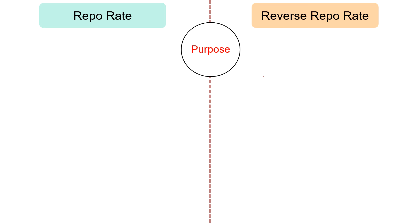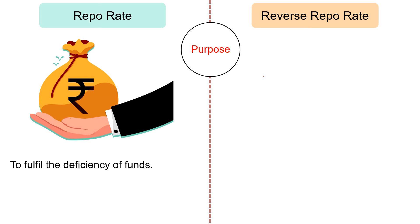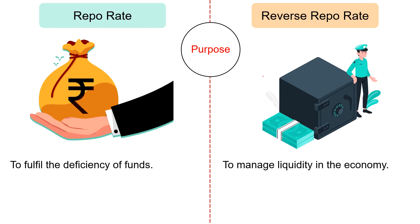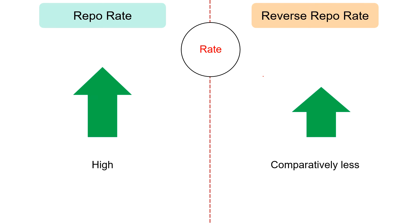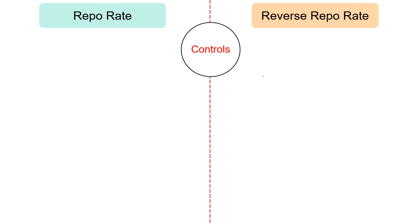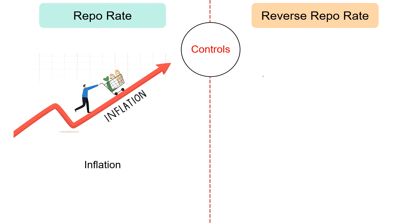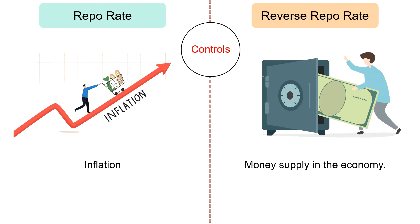Regarding purpose: in case of repo rate, there are two main reasons — to fulfill deficiency of funds or to fulfill CRR or SLR requirements. In case of reverse repo rate, the purpose is to manage liquidity in the economy. Regarding rate: in general, repo rate is always higher than the reverse repo rate. Regarding controls: repo rate is a monetary tool used by the central bank for controlling inflation, whereas the central bank uses reverse repo rate for controlling money supply in the economy.